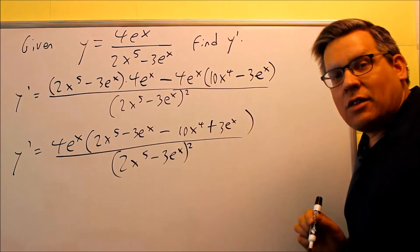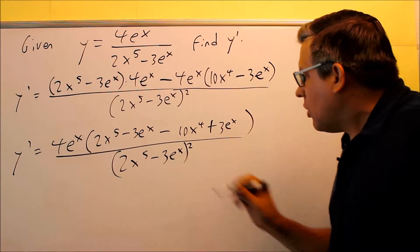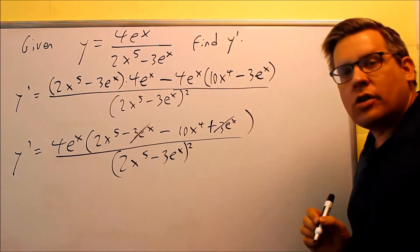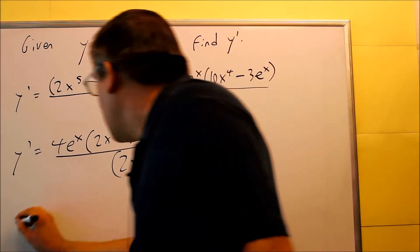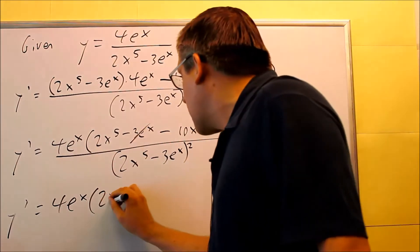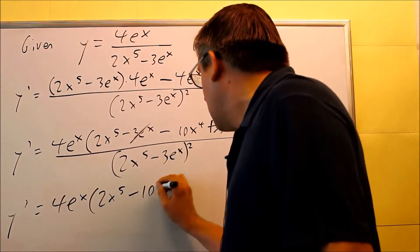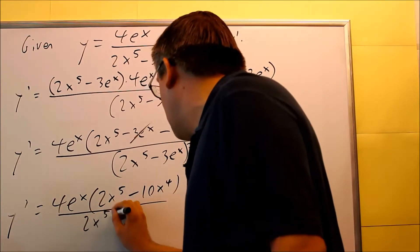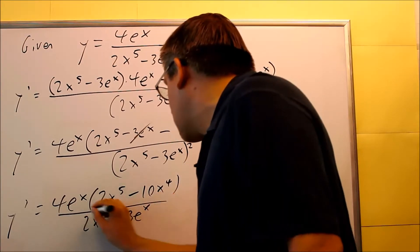So now, we want to combine the part inside the parentheses. What I notice is these 3e to the x's, those are both going to cancel, and then we're left with 4e to the x on the outside. These two here, 2x to the 5th minus 10x to the 4th, and then this is 2x to the 5th minus 3e to the x squared.